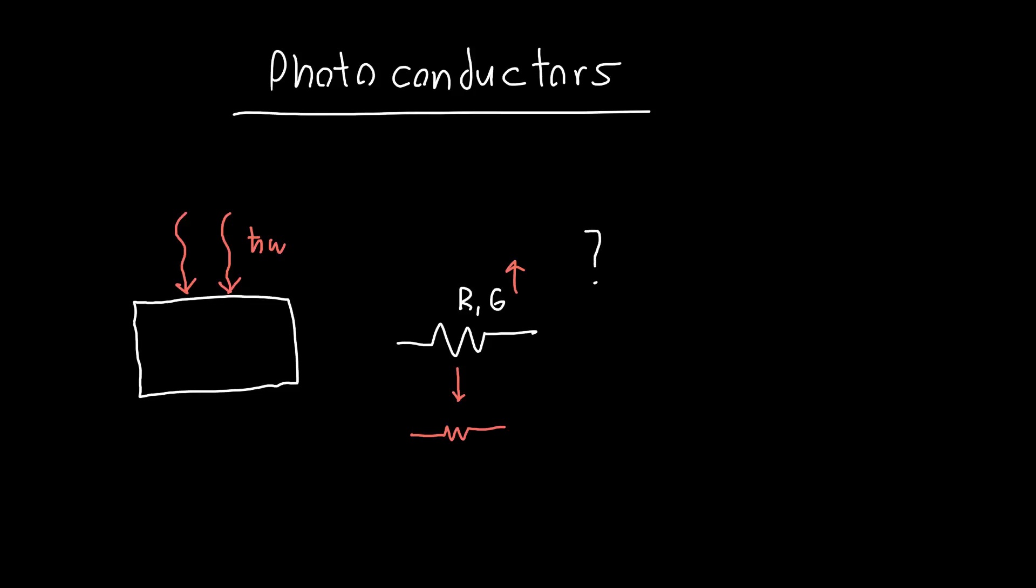Now why does this happen? Well, photoconductors are typically semiconductors with a certain conductivity, and we know that the conductivity of a semiconductor is proportional to the number of charge carriers.